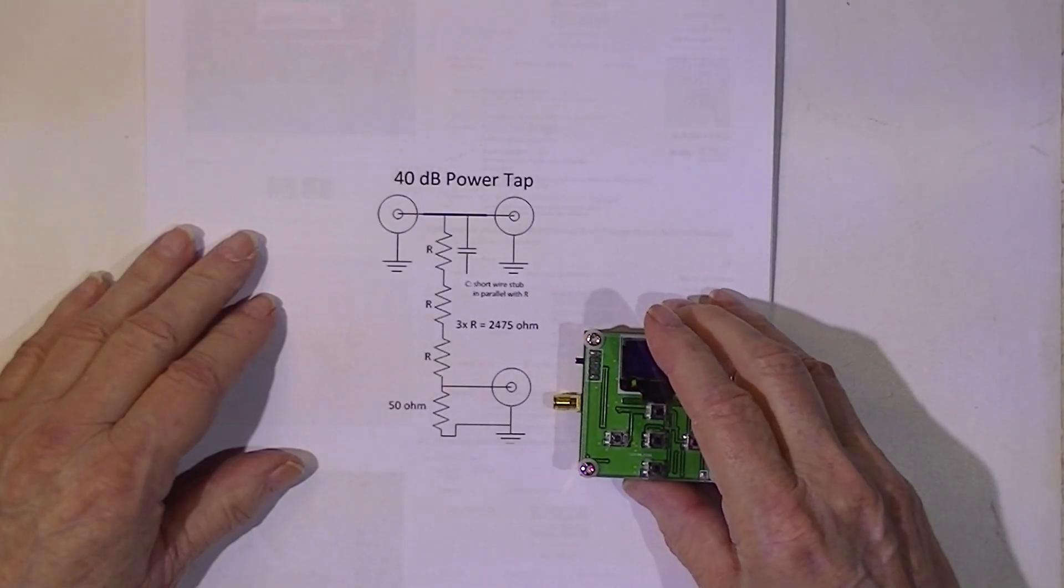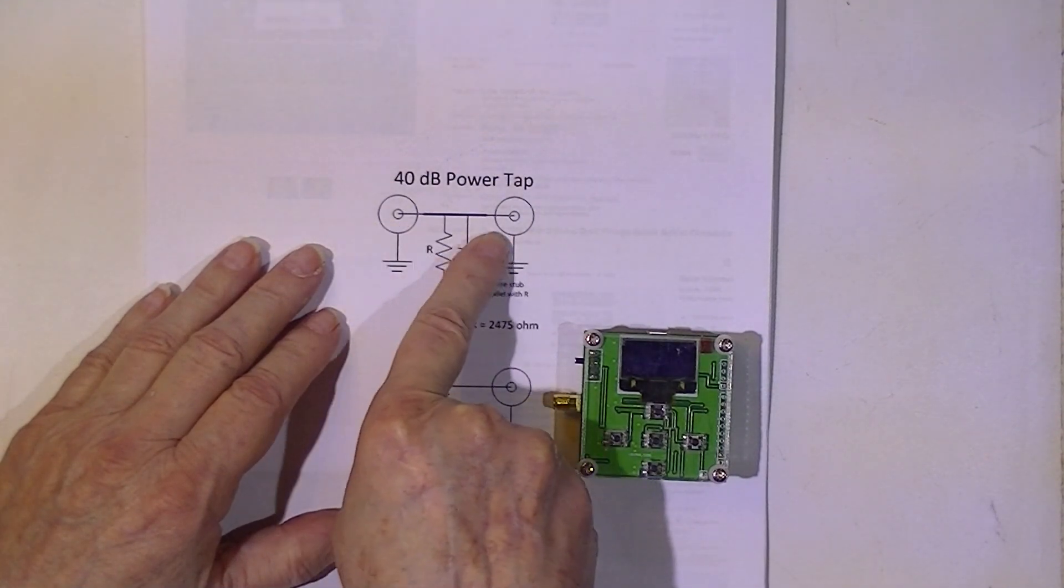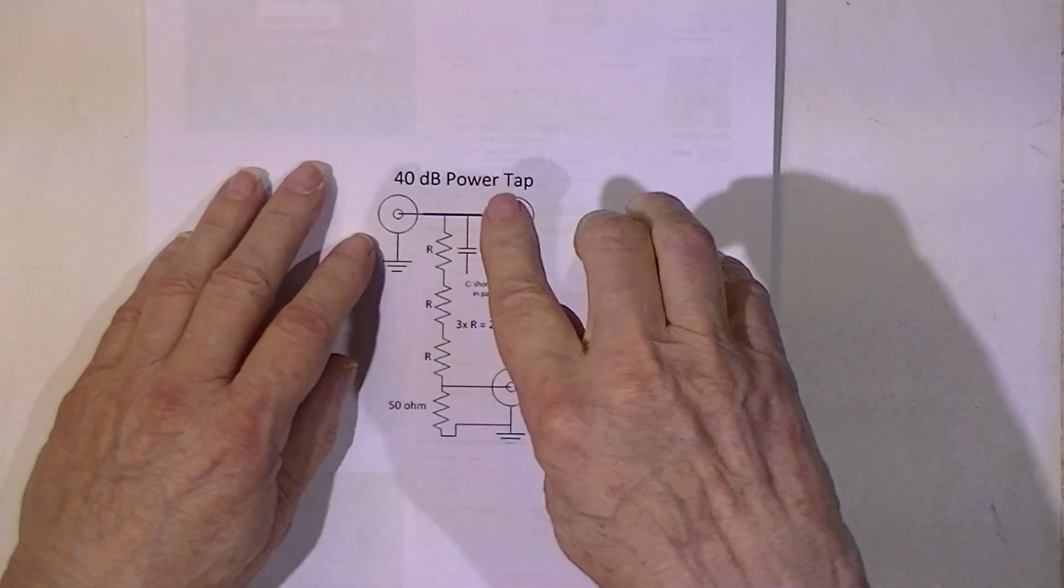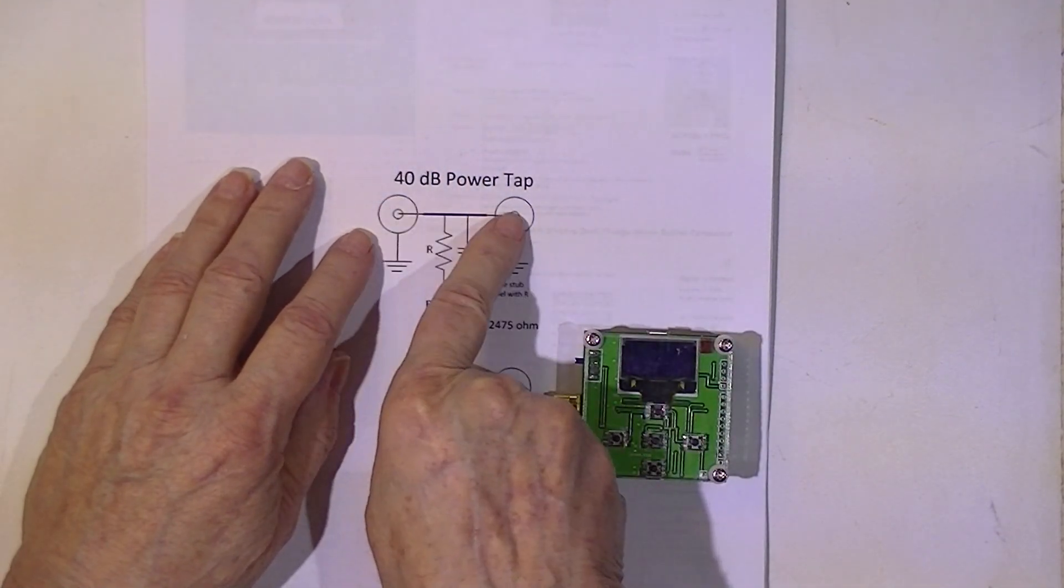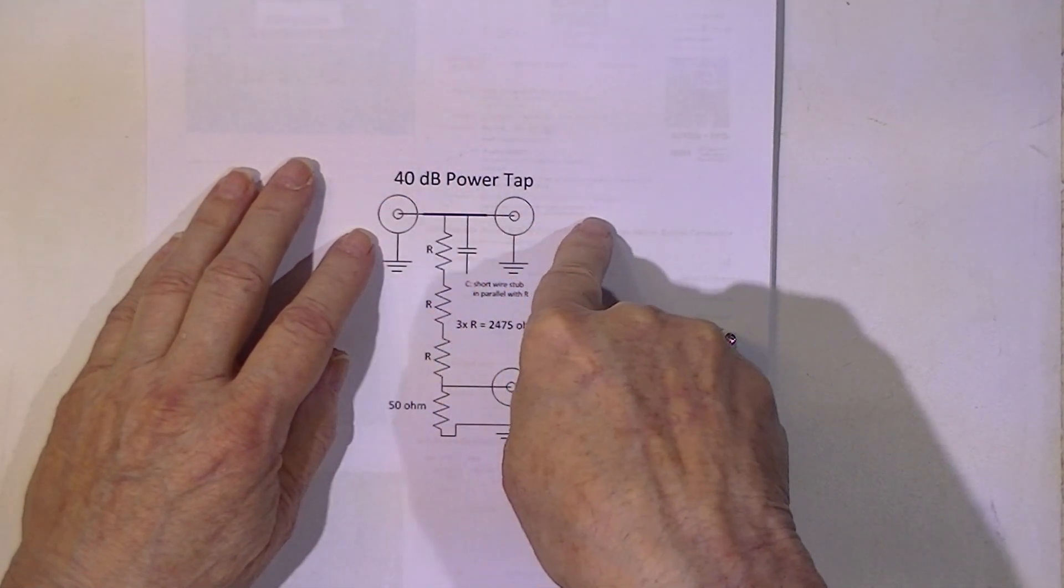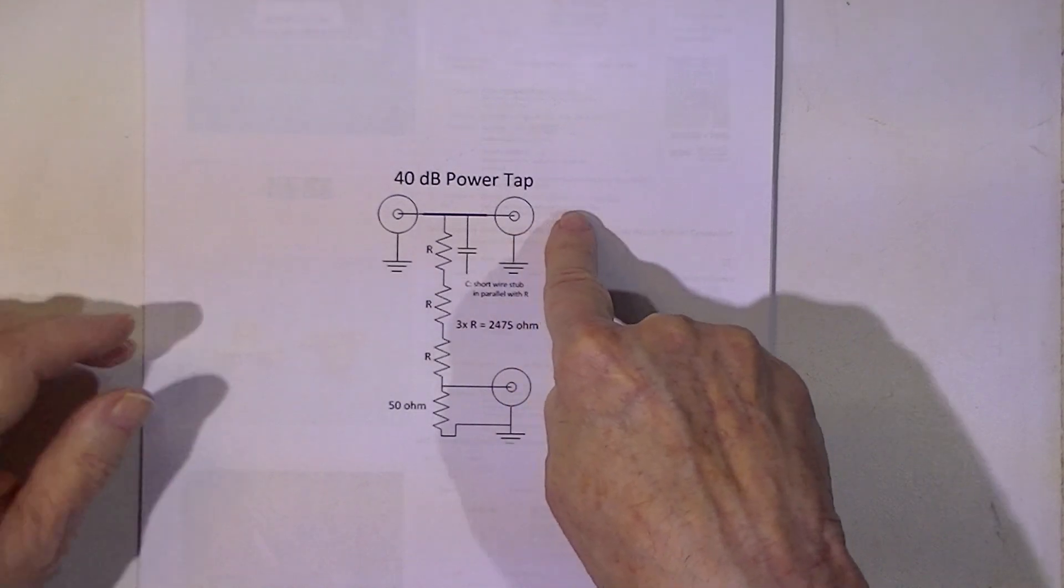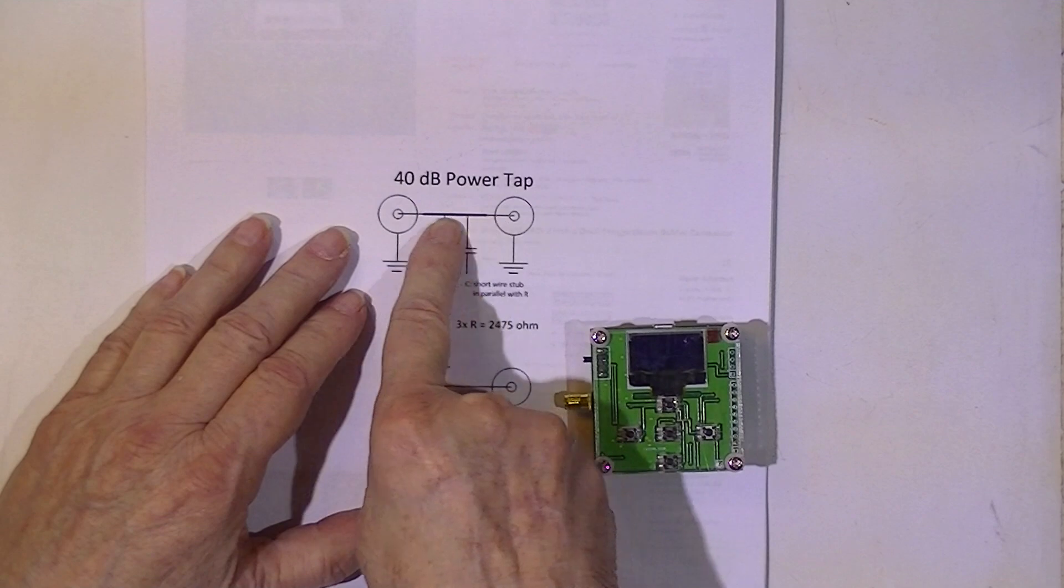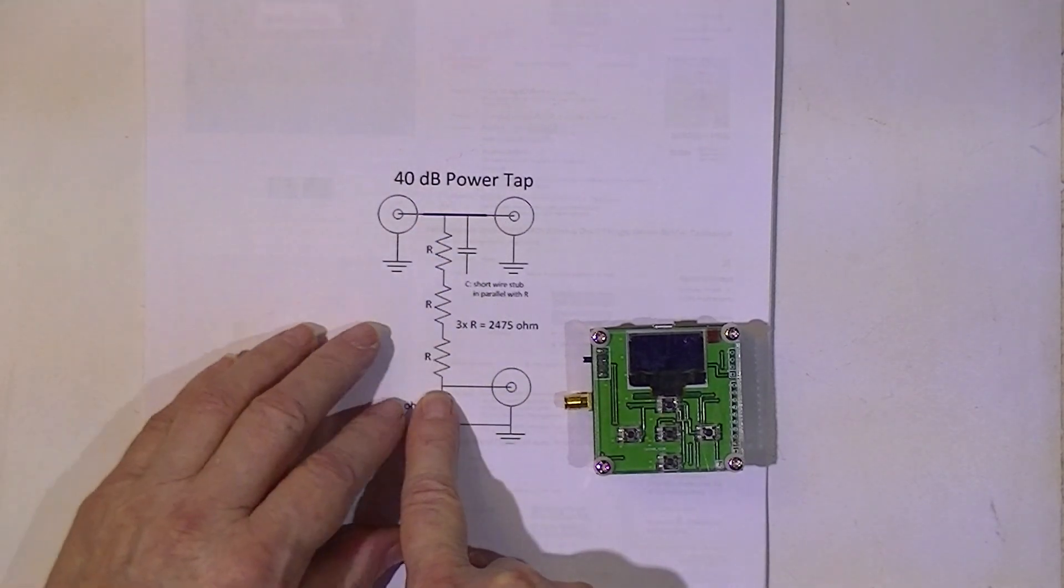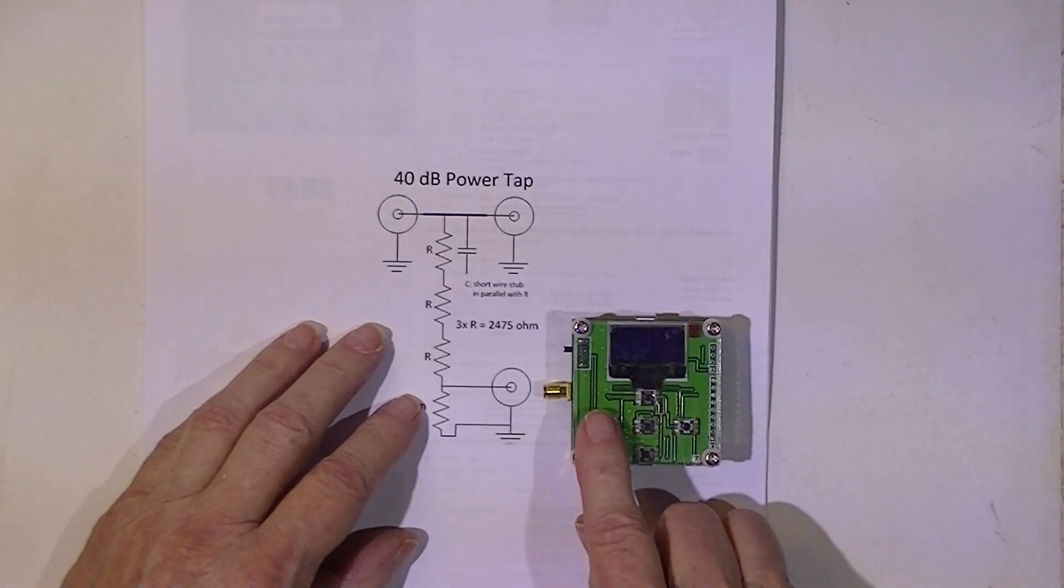The way the tap will work is a sample of the power passing through the tap. Say RF generator is here, and here is, I don't know, a heating oven or, in most cases, an antenna. I want to sample the energy here and then output that sample to the little wattmeter.